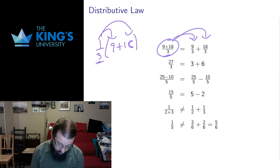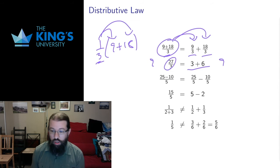And if we work this out, 9 plus 18 is 27, 27 over 3 is 9. 9 over 3 is 3, 18 over 3 is 6. 3 plus 6 is also 9. So this works out to 9 on both sides.